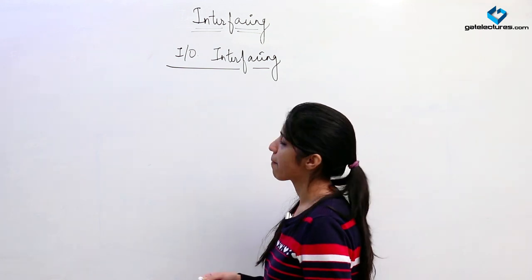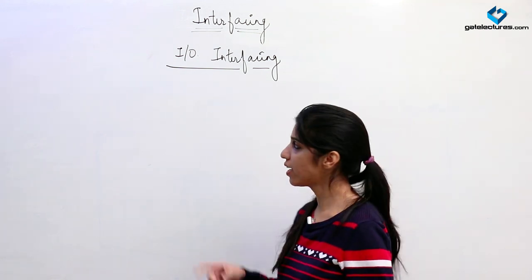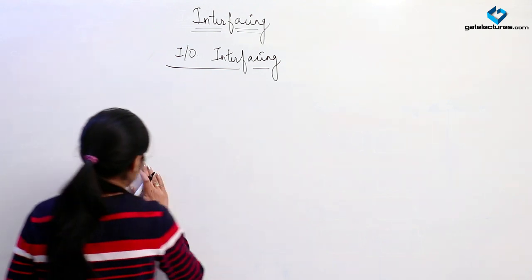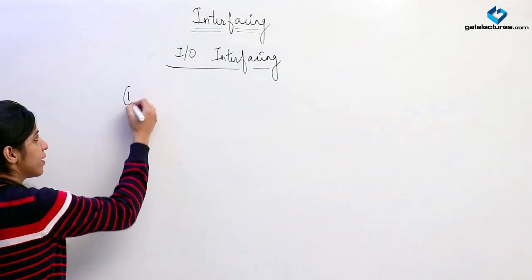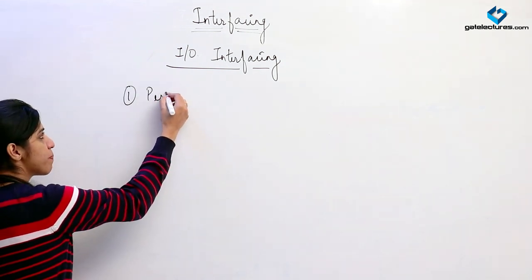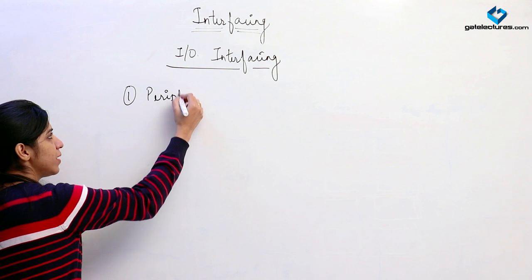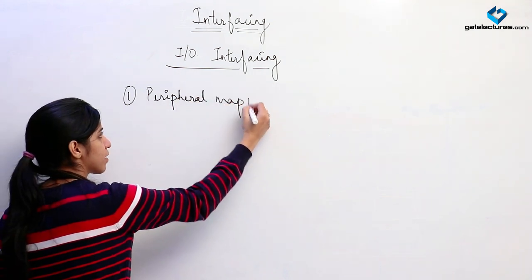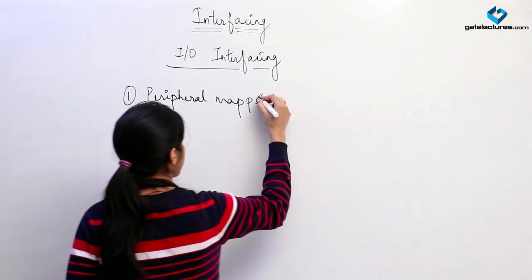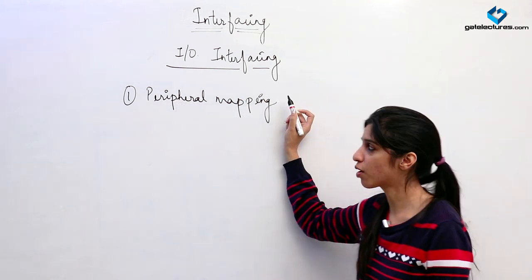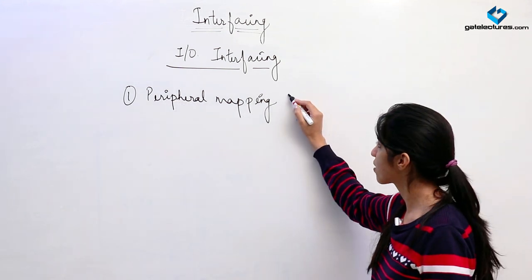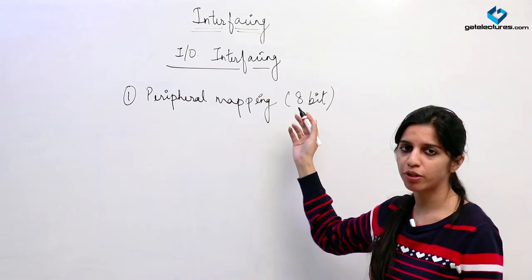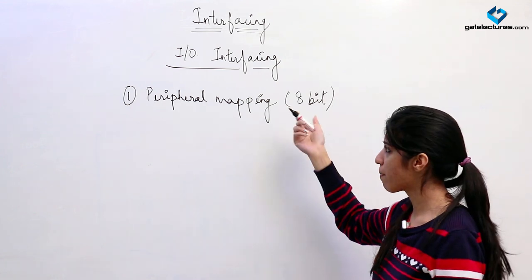We have already seen memory mapping; now we are looking at IO mapping, input-output mapping. There are two types of mapping: one is peripheral mapping, where we are going to put input-output devices. They are going to have an 8-bit address and we are going to interface or map them.